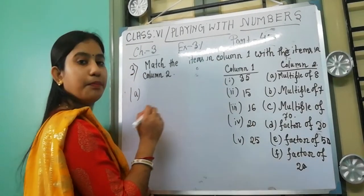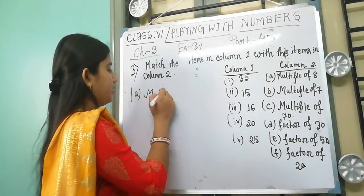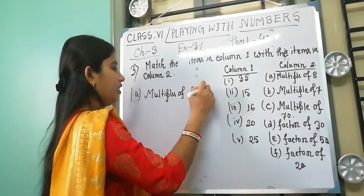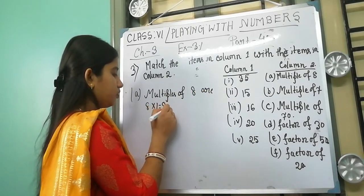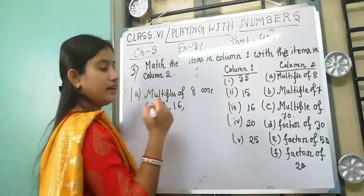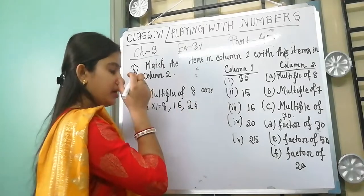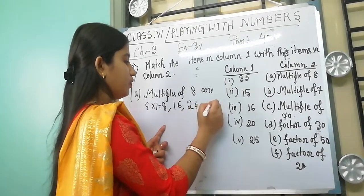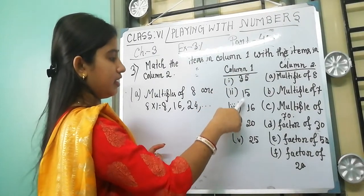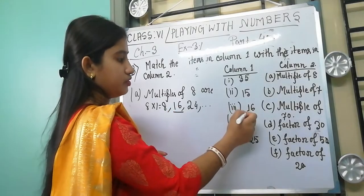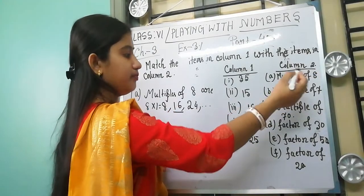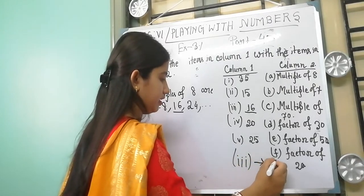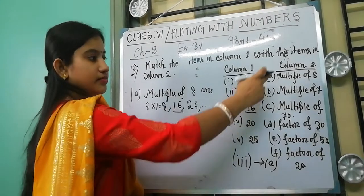Number A: multiple of 8. So we find the multiples of 8. 8×1=8, 8×2=16, 8×3=24, and so on. Now in column 1, we see that 16 is there. So we match this — 16 is a multiple of 8. So number 3 matches with A.